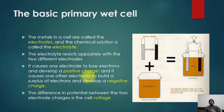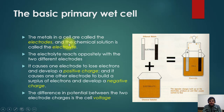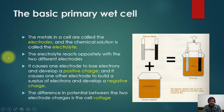How does a wet cell operate? The metals in a cell are called electrodes and the chemical solution is called the electrolyte. These two different electrode materials react oppositely with the electrolyte. This causes one electrode to lose electrons and develop a positive charge, and causes the other electrode to build up a surplus of electrons and develop a negative charge.